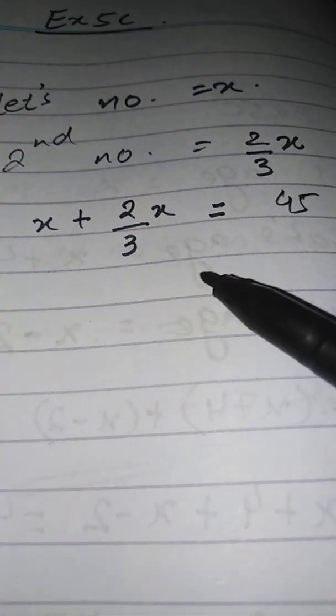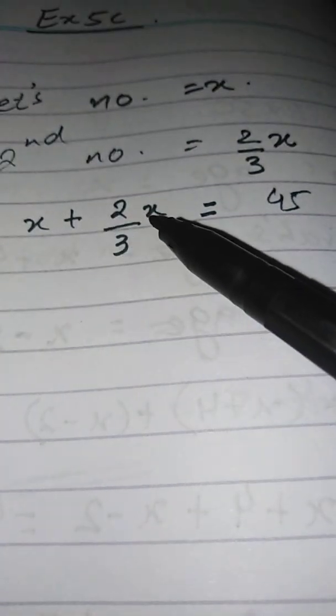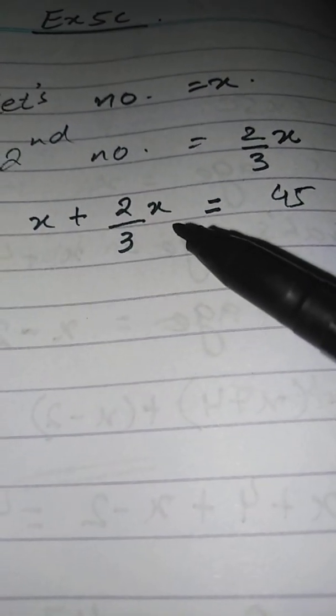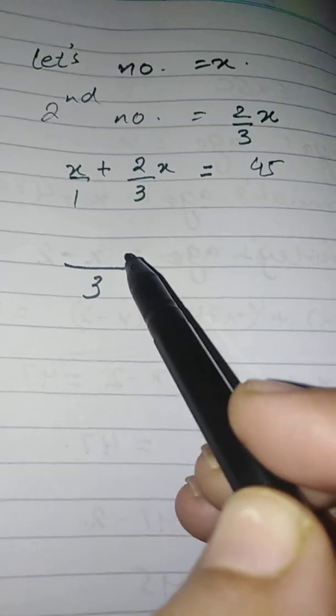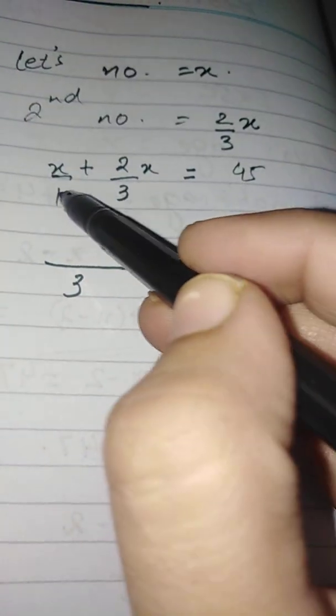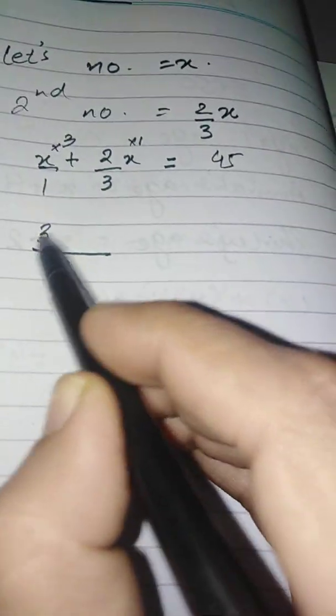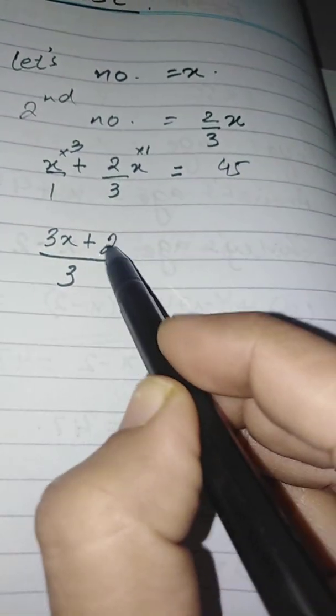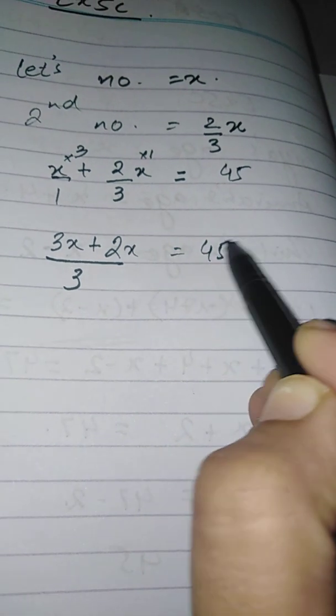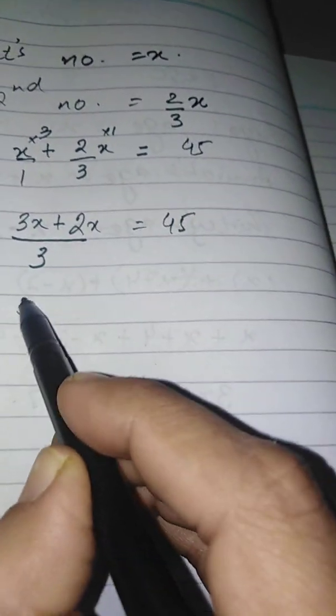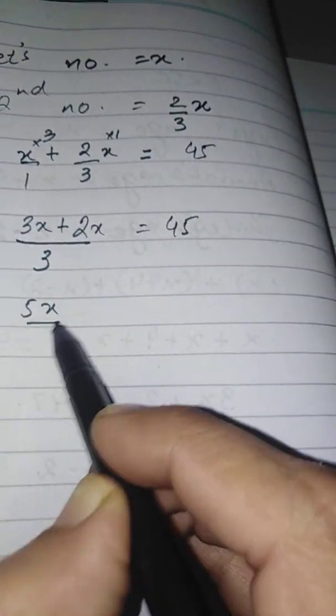Here we have X plus two-thirds X. Whenever you have fractions, you have to take the LCM. The LCM is 3, so we get three X plus two X over three, which equals 45.